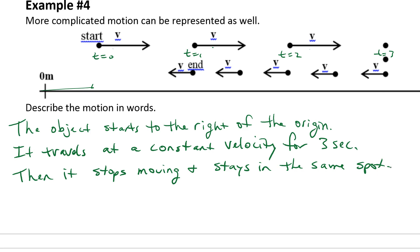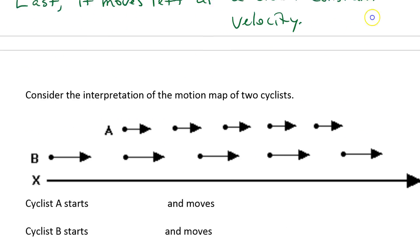And then lastly it moves left at a slower, but still these arrows are the same length, so at a slower constant velocity.